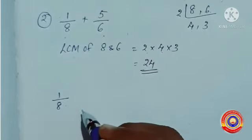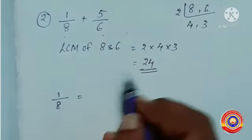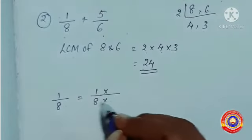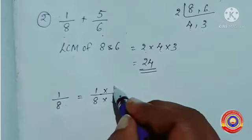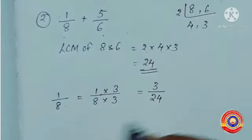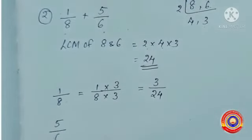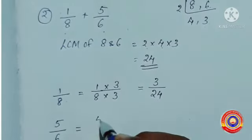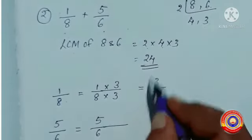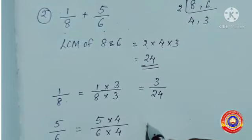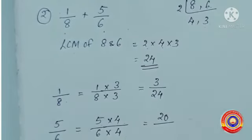Now find the like fractions of 1 by 8 and 5 by 6. For 1 by 8: 8 into 3 equals 24, so multiply 3 with the numerator also. 1 into 3 equals 3, and 8 into 3 equals 24. So 1 by 8 is equal to 3 by 24. For 5 by 6: 6 into 4 equals 24, so multiply 4 with the numerator also. 5 into 4 equals 20, and 6 into 4 equals 24. Then 5 by 6 is equal to 20 by 24.